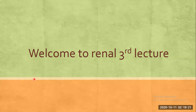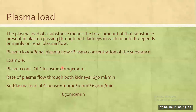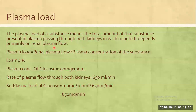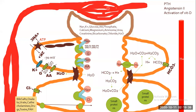I am going to start with plasma load. The plasma load of a substance means the total amount of that substance present in plasma passing through both kidneys in each minute. It depends primarily on renal plasma flow.